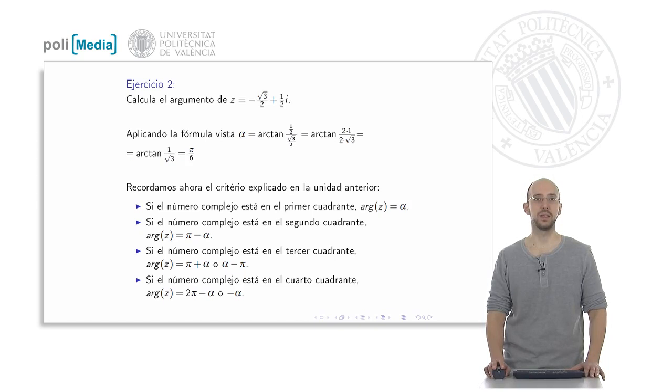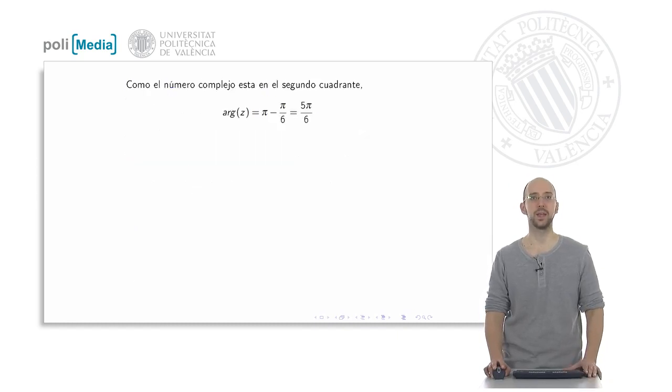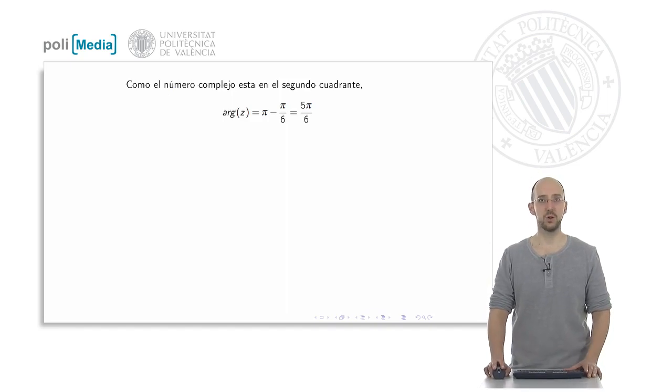If we look at the diagram we saw last day, if the complex number is in the second quadrant, what we would have to do is calculate pi minus the value obtained with the value of the arctangent. Well, in this case, it would simply be pi minus pi sixths, which would be 5 pi sixths.